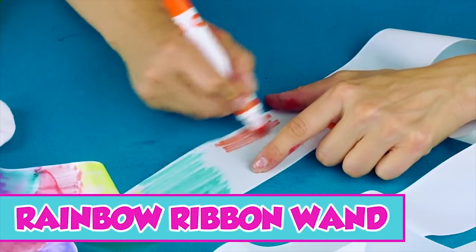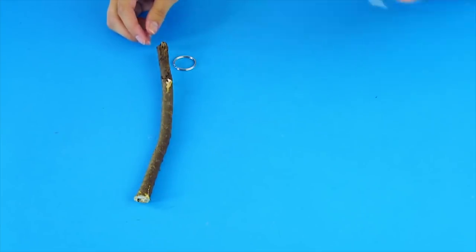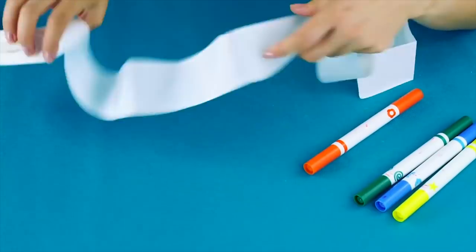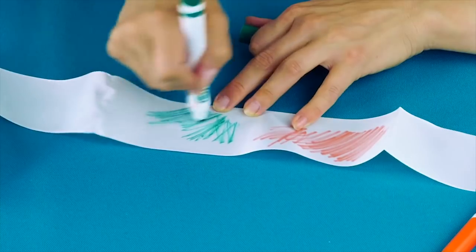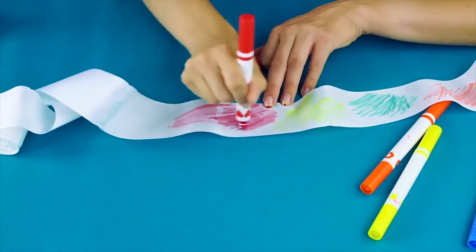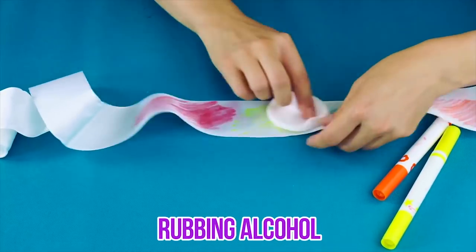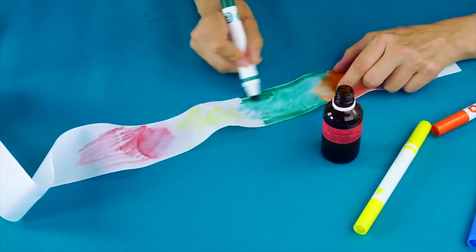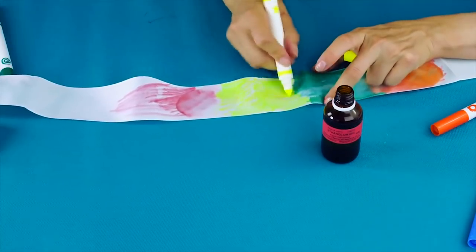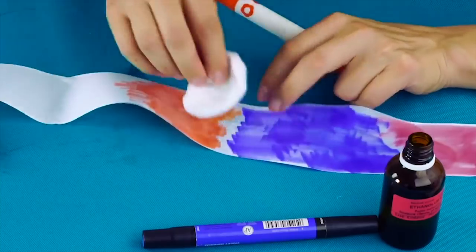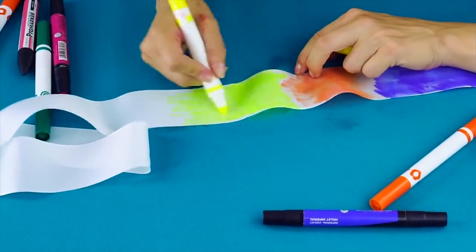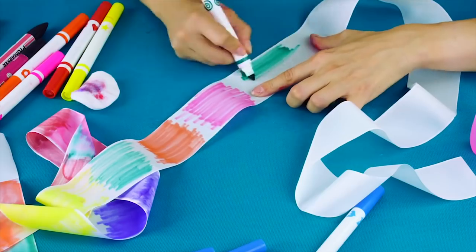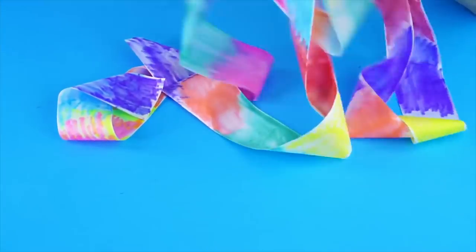Rainbow Ribbon Wand. For this hack you'll need a stick, a key chain ring, an eyelet, some markers, white ribbon, and some rubbing alcohol. Start by unrolling the ribbon and use your markers to draw in thick stripes. Once you've drawn the stripes, use the alcohol to help the colors blend together for a pretty watercolor look. Look at this tie-dye style masterpiece. Now put your key ring through the eyelet and screw the eyelet into the end of your branch.